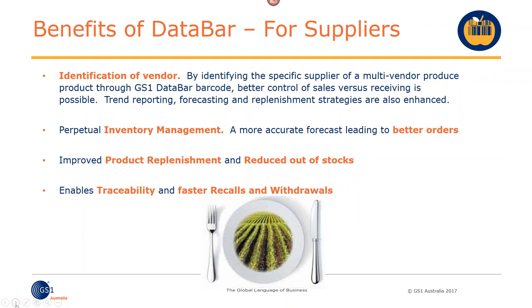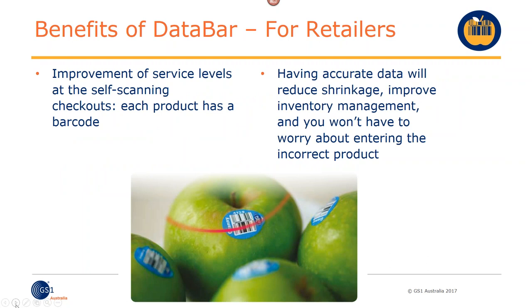With a barcode now identifying the grower or shipper, we can target faster recalls and withdrawals more accurately, providing a safer food chain and safer food quality for consumers. This saves retailers a lot of money, as they can stop the sale of a recalled product. For suppliers, there are many benefits, and GS1's role is to work with industry, suppliers, printers, and the whole supply chain to ensure we're creating one standard way of marking and identifying produce — not just because the retailer has asked you to, but to get real benefits out of having GS1 data bar.